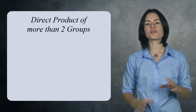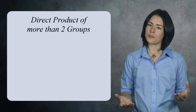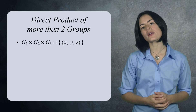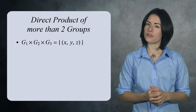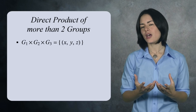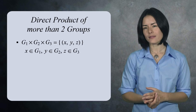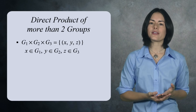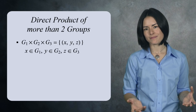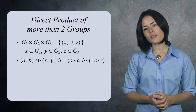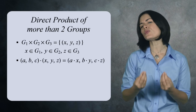You can take the direct product of more than two groups. For example, the direct product of G1, G2, and G3 is the set of all triples, where the first component is from G1, the second component is from G2, and the third component is from G3. Like before, the group operation is performed component-wise.